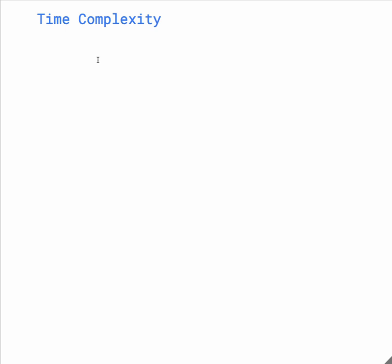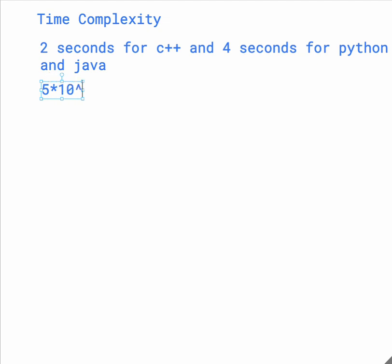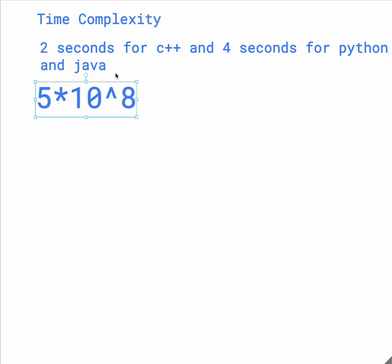The time limit in USACO is 2 seconds for C++ and 4 seconds for Python and Java. If we think about it differently, that's around 5 times 10 to the 8th operations. So the goal is to get a solution that has less than this many operations — something less than O(5 × 10^8).